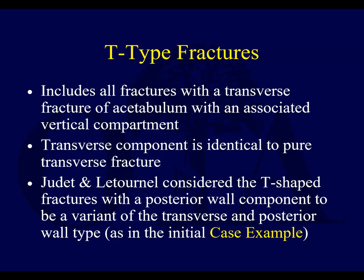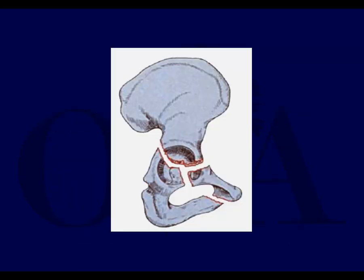T-shaped or T-type fracture includes all fractures that have a transverse component with an associated vertical component. The transverse component is just like a transverse fracture, but when you have this T-shaped fracture, it becomes very hard to control operatively. You often have to go to both sides or use extensile approaches depending on how displaced they are. Judet and Letournel consider T-shaped fractures with a posterior wall component to be a variant of transverse posterior wall.